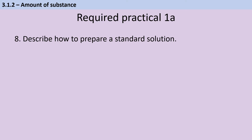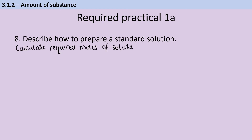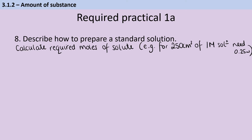Required practical one for A-level chemistry has two parts: part A is making the standard solution, and part B is the titration. This can come up as a six-mark question requiring a huge amount of method detail. To begin, you calculate the number of moles of solute needed — for instance, if asked for 250 cm³ of a 1 mol dm⁻³ solution, you'd be adding 0.25 moles. Then calculate the mass to add by taking the relative formula mass and multiplying by the number of moles.